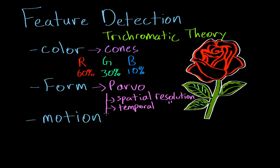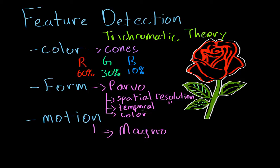The parvo pathway also allows us to see things in color — it provides both fine detail and color vision. But if something is moving, we can't use the parvo pathway. What we use instead is the magno pathway. The magno pathway is a set of specialized cells, just like the parvo pathway, that allow us to encode motion.